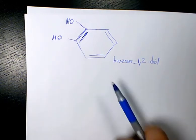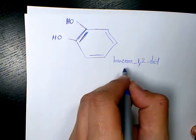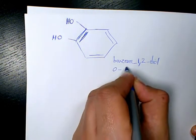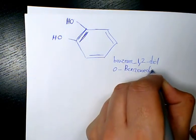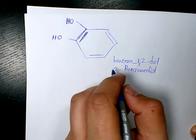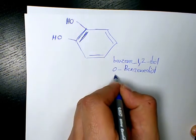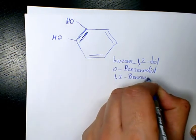The other name for this organic compound is ortho-benzenediol or benzene diol. Another name is 1,2-benzenediol.